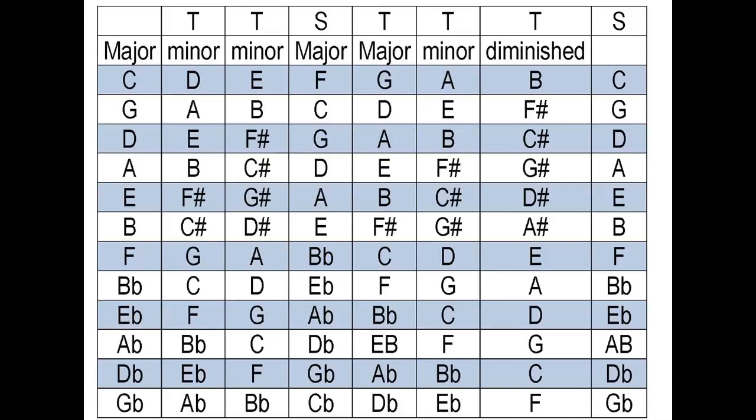When we talk about the key of A minor, we're working with major scales here. The fastest way to find a minor scale is to go to the sixth column — that is what's called the relative minor. In the key of C major, the relative minor is A. In the key of G major, the relative minor is E. It's always the sixth note of the major scale. In the C major scale, the sixth note is A, so if you play A, B, C, D, E, F, G, A, you now have an A minor scale.